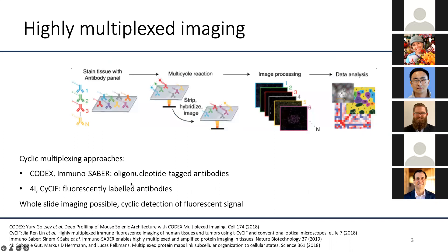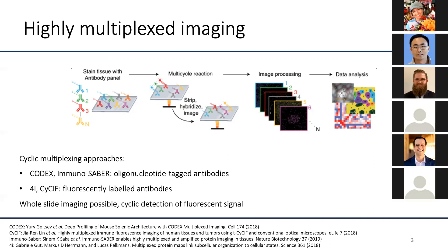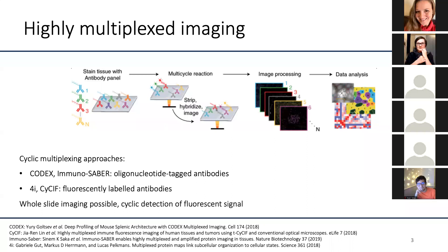For cyclic multiplexing, you either have oligonucleotide-tagged antibodies to which fluorescently labeled probes bind sequentially, or with 4i, they use fluorescently labeled antibodies with a strip-and-stain protocol to multiplex up to 25 to 40 markers at once. The nice thing about this technology is that you can image a whole slide, though the cyclic strip-and-stain approach does take some time.